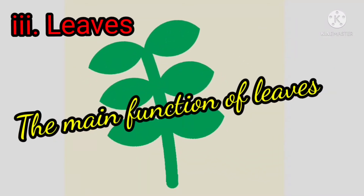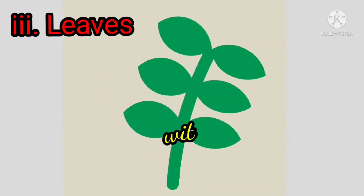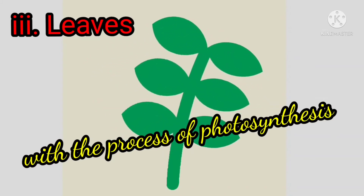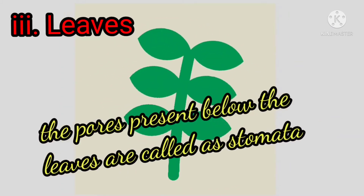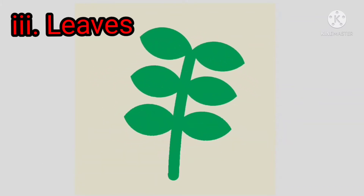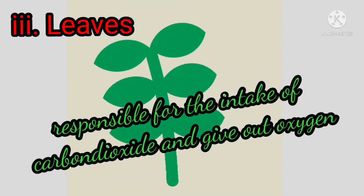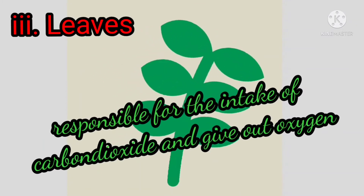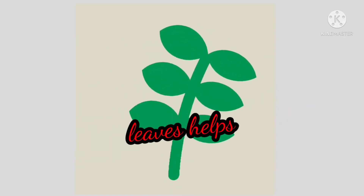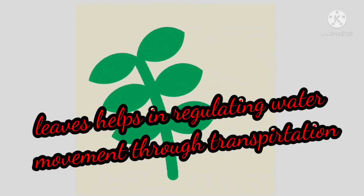The main function of leaves is to produce food through the process of photosynthesis. The pores present below the leaves are called stomata, responsible for the intake of carbon dioxide and giving out oxygen. During photosynthesis, leaves also help in regulating water movement through transpiration.